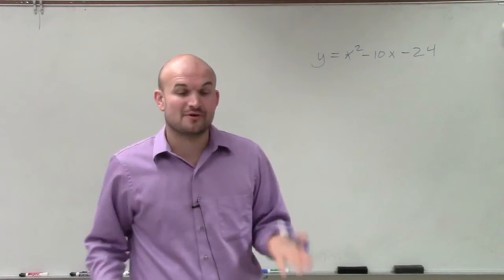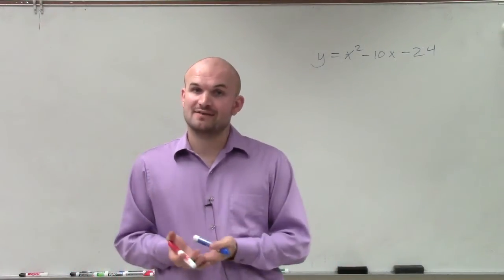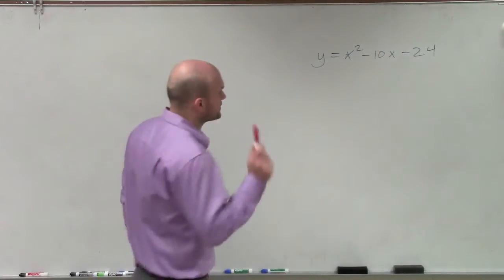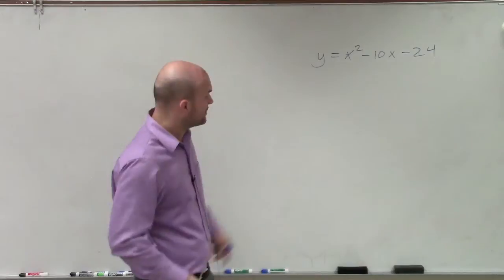Now remember, if we're looking at two factors that are going to multiply to give us negative 24, one of those numbers has to be negative. Now, before we start writing down all the factors of negative 24, let's look at the middle term.